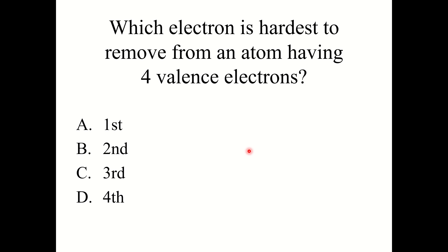One more knowledge check: which electron is hardest to remove from an atom having four valence electrons? The answer is D — the fourth. It gets harder to remove electrons the more you remove because you are creating cations, and cations are smaller than neutral atoms, so they require more energy to remove electrons from. The fourth electron is the hardest to remove.